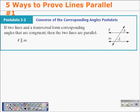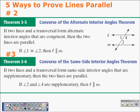Two more ways to prove lines parallel. The converse of the alternate interior angles theorem: if two lines and a transversal form alternate interior angles that are congruent — in this case angle 1 and angle 2 — then the two lines are parallel. So if angle 1 is congruent to angle 2, then L is parallel to M.